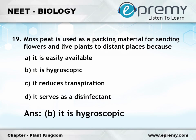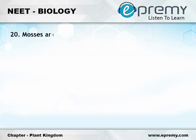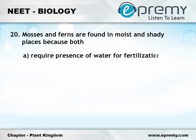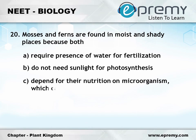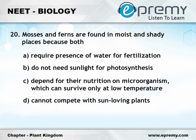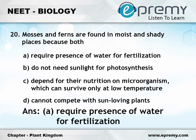Question number twenty: mosses and ferns are found in moist and shady places because both option A require presence of water for fertilization, option B do not need sunlight for photosynthesis, option C depend for nutrition on microorganisms which can survive only at low temperature, option D cannot compete with sun-loving plants. The answer is option A require presence of water for fertilization.